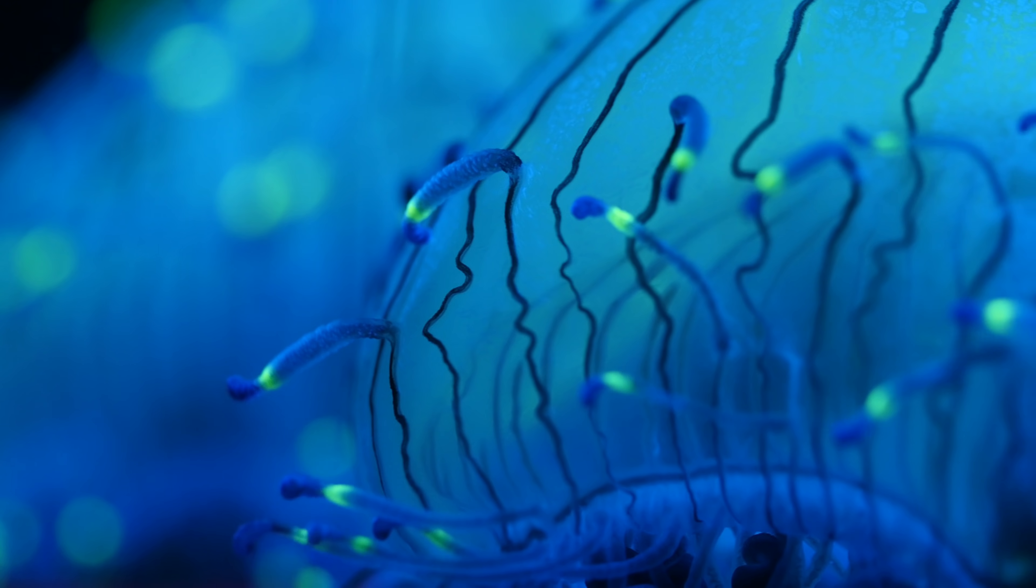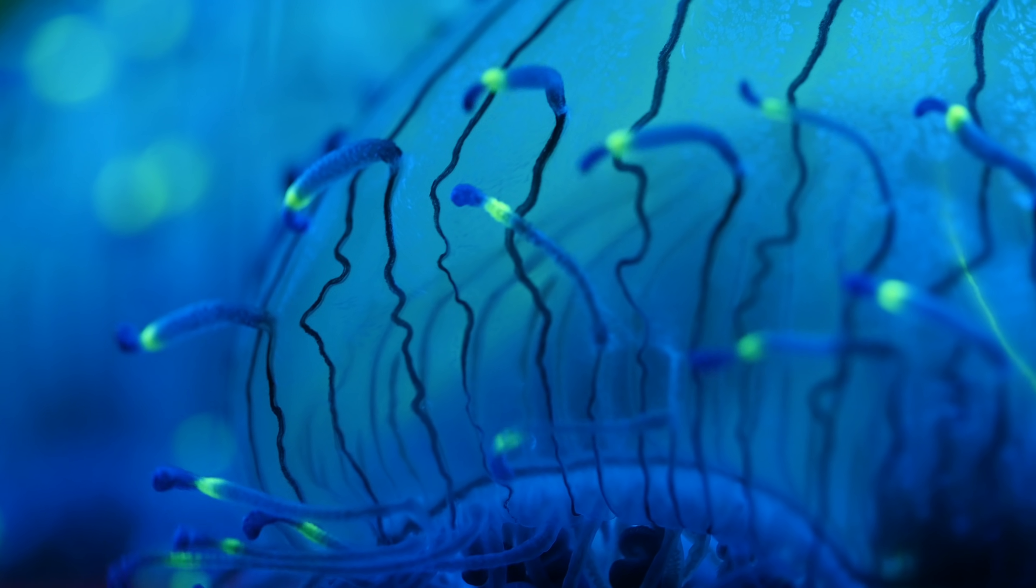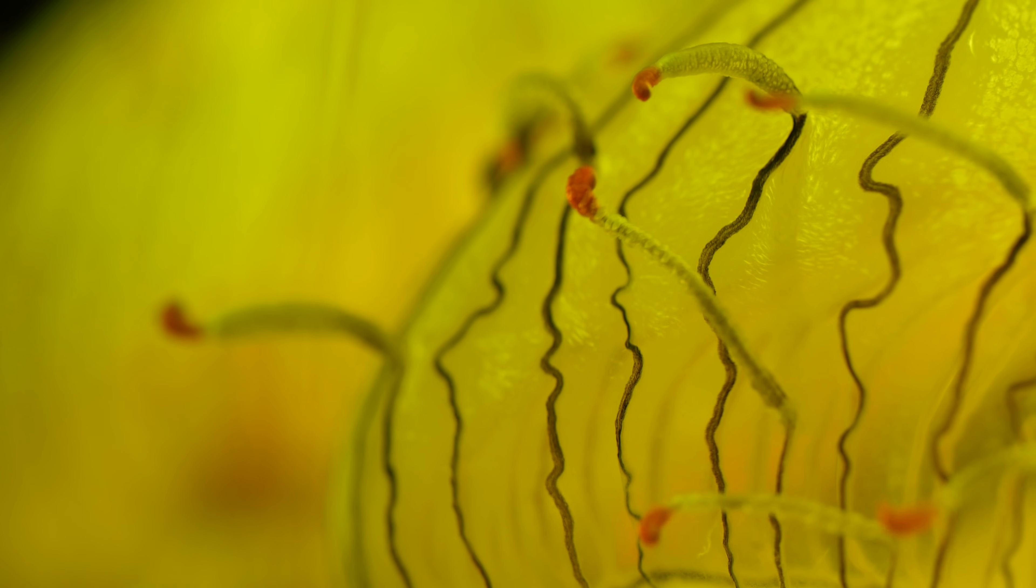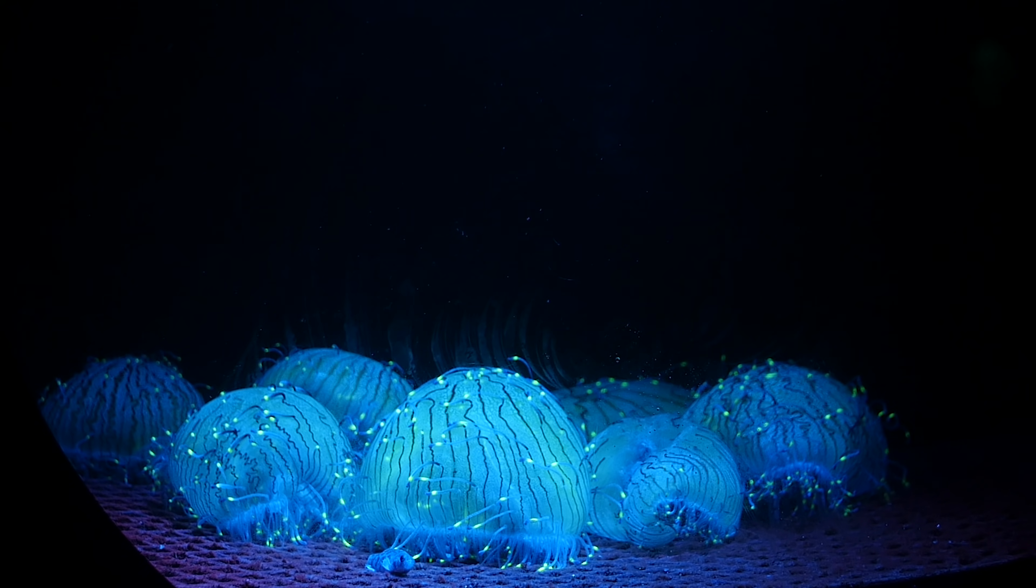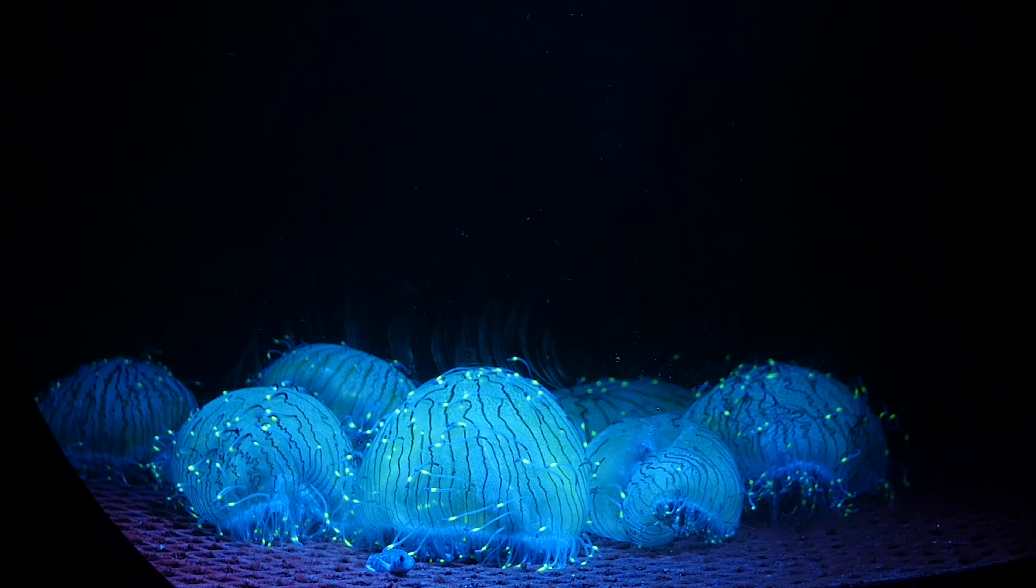Some jellies have another trick to lure prey. See those bright green bulbs on the tentacles? In daylight, they're kind of orange. But under a blue light, they fluoresce to attract prey.